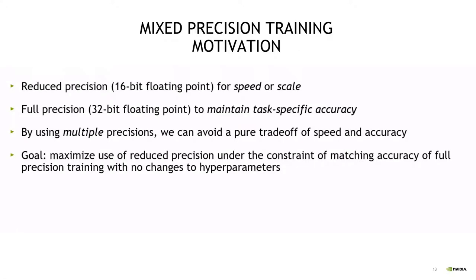The core idea in mixed precision training is we want to use reduced precision numbers to make things faster and to build bigger models, use bigger mini-batches and so on. We will use FP16 as much as possible for speed and scale, but at the same time identify the parts of the model that need full precision and use FP32 there. Combining these two approaches gives us mixed precision mode, which allows us to maintain complete task-specific accuracy with higher training speed. This approach can be applied to any model: image classification, natural language processing, or generative models.